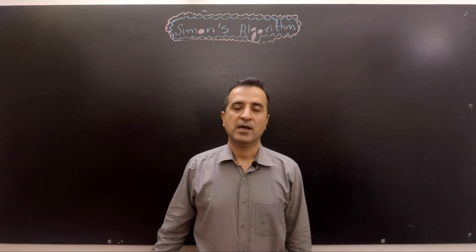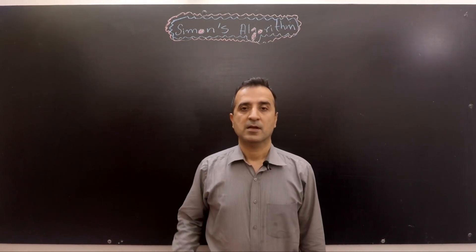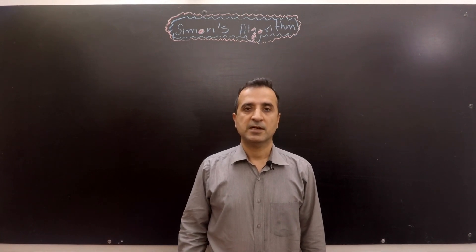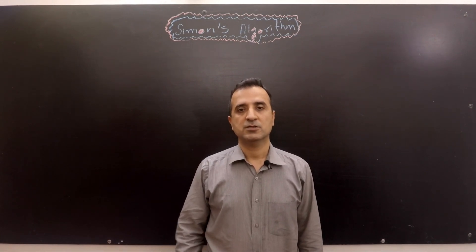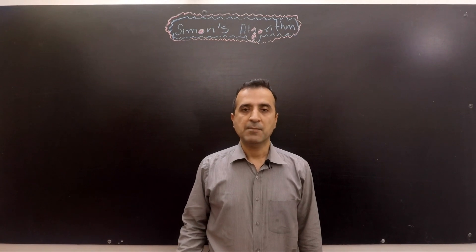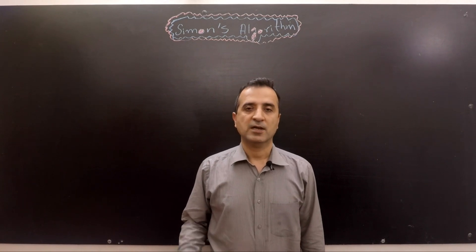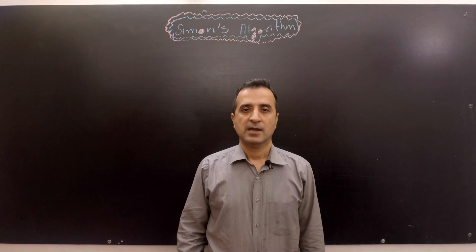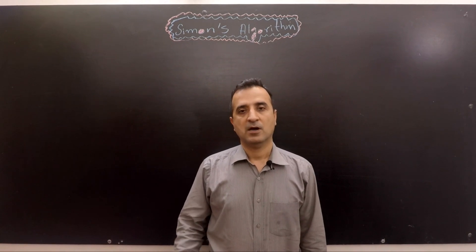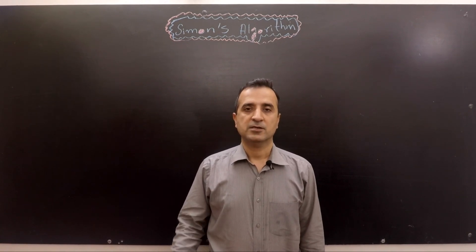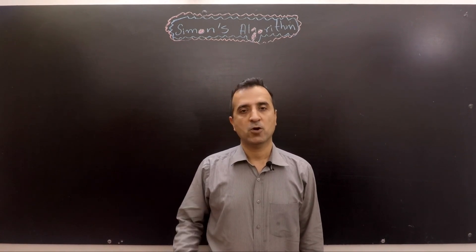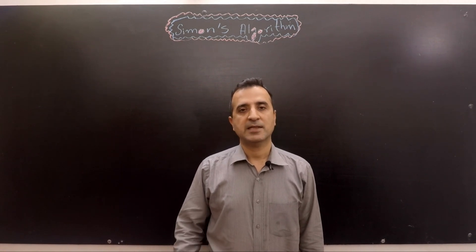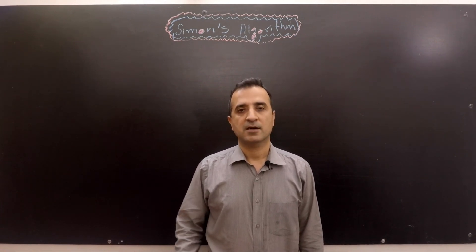In the previous video I described Simon's problem and presented two classical solutions to that problem. The time complexity of the classical solutions is exponential. In this video I will draw a quantum circuit that solves Simon's problem in polynomial time and I will do all the mathematics behind that quantum circuit. So let's start.